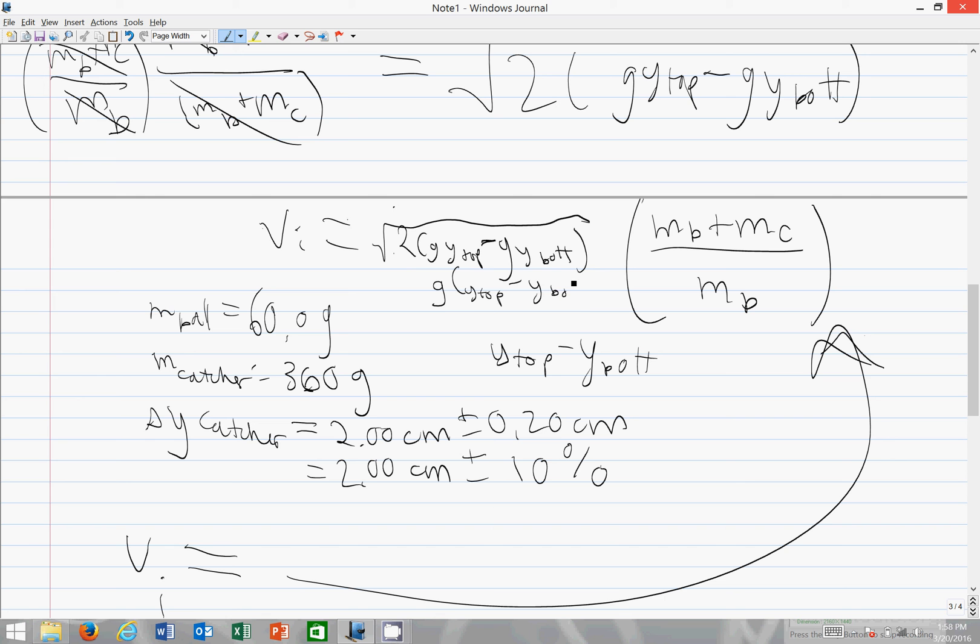You can see I simply wrote this part of the equation again but with the g out in front, factored out. And so now you have y top minus y bottom so this is 2g delta y. Which I'm going to now erase all of this and rewrite it more cleanly. So our new equation for v initial is 2g delta y with the delta y given right here, 2g delta y times mb plus mc over mb. Of course this whole thing.